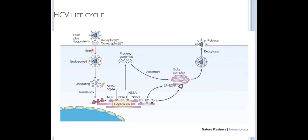Its life cycle is like most enveloped viruses. It gets endocytosed via a specific set of receptors, uncoats after being endocytosed in an endosome. Unlike flu, which we're going to talk about, it stays in the cytoplasm for its entire life cycle. It forms this odd sort of organellar structure called a membranous web, where it scaffolds all of its proteins, makes its replication hub, and then makes new proteins and new genomes that get repackaged and exocytosed.